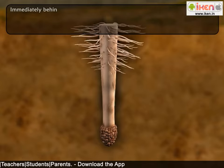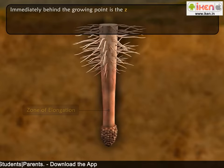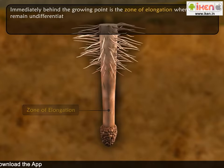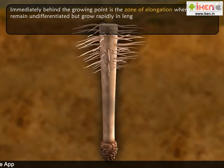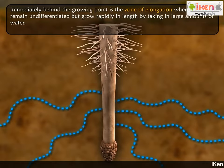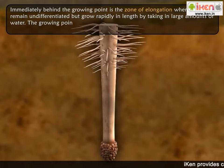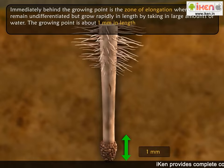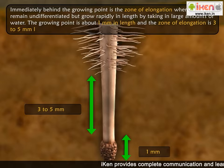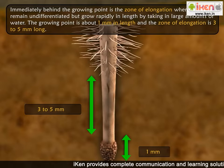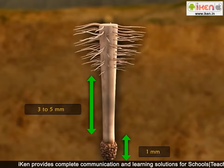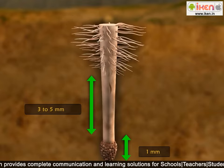Immediately behind the growing point is the zone of elongation, where the cells remain undifferentiated but grow rapidly in length by taking in large amounts of water. The growing point is about one millimeter in length, and the zone of elongation is three to five millimeters long. These two are the only parts of the root that account for the continued elongation of the root.